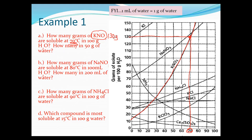So 130 grams dissolve at 70 degrees in 100 grams of water. Now what if we only have 50 grams of water? Since the graph is based on 100 grams and 50 is half of 100, you take half of 130, which gives you 65 grams. So if you have 50 grams of water, 65 grams of KNO₃ will dissolve. If you have 100 grams of water, 130 grams will dissolve.